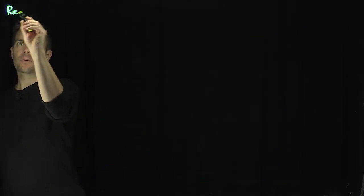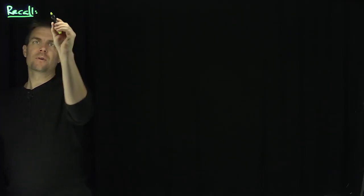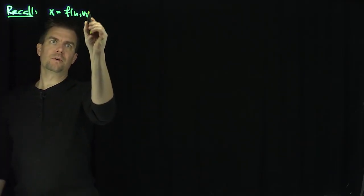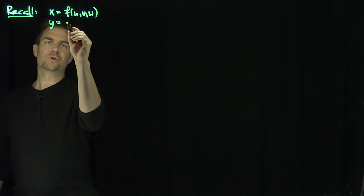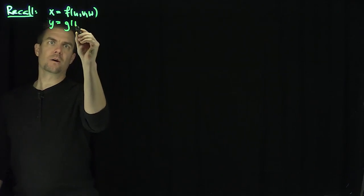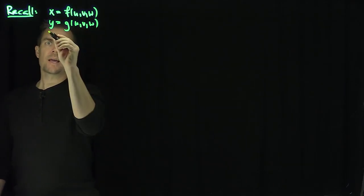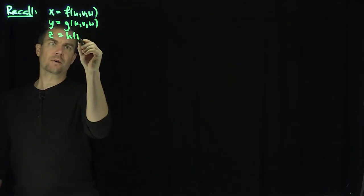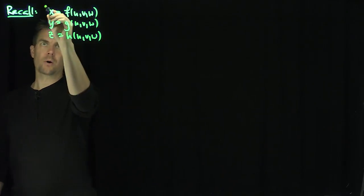Let's recall our setup for gradients. Recall that we have a transformation f, which is x of u, v, and w; y, which is g of u, v, and w; and z, which is h of u, v, and w, like so.